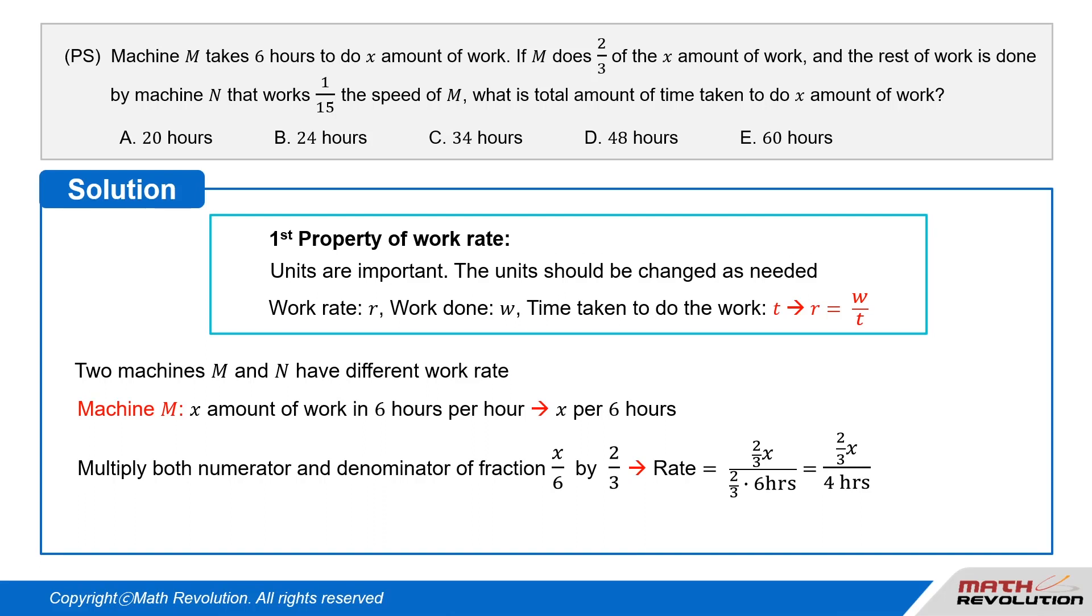So multiply both numerator and denominator of fraction X/6 by 2/3. Then we have (2/3 × X)/(2/3 × 6 hours) = (2/3 × X)/4 hours. Thus, Machine M takes 4 hours to complete its share of the work.